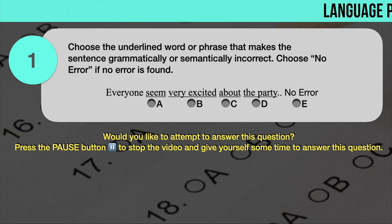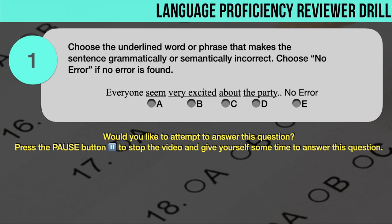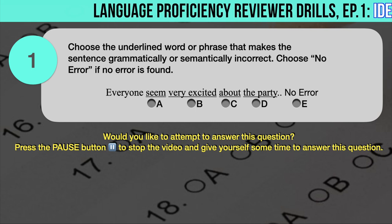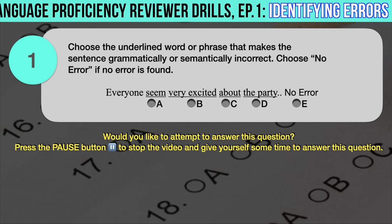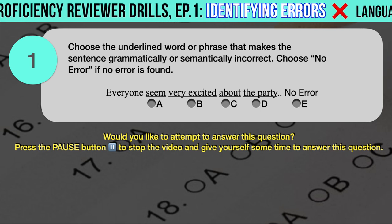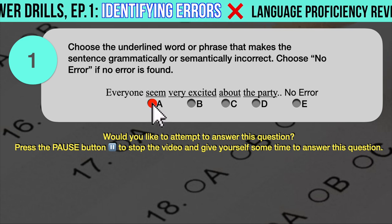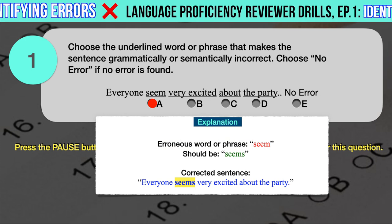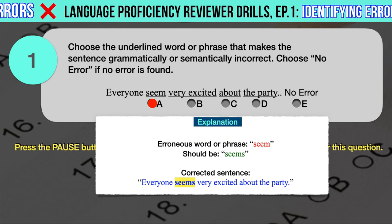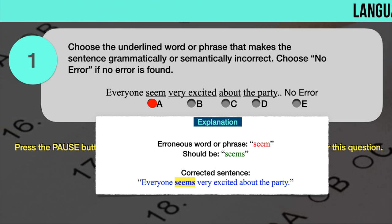Drill question number 1. Choose the underlined word or phrase that makes the sentence grammatically or semantically incorrect. Choose no error if no error is found. 'Everyone seem very excited about the party.' The underlined words are: A. Seem, B. Very excited, C. About, D. The party. The correct answer is A. The erroneous word is 'seem' — it should have been 'seems.' Everyone is a singular subject that requires a singular verb. The correct sentence should read: Everyone seems very excited about the party.